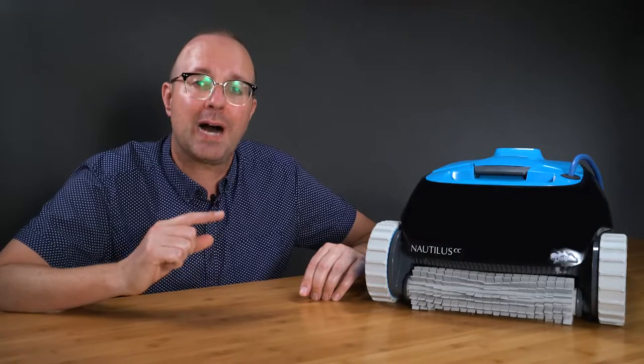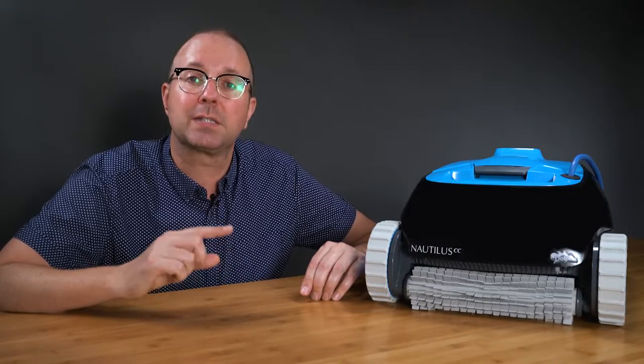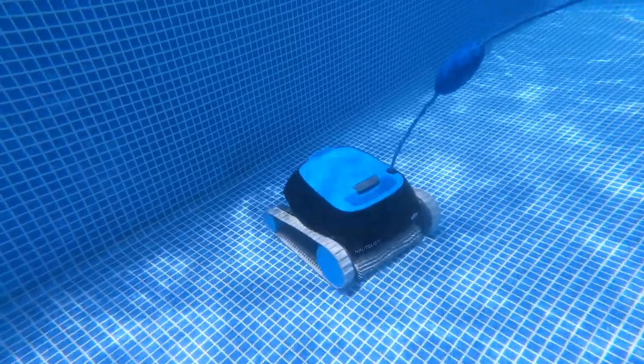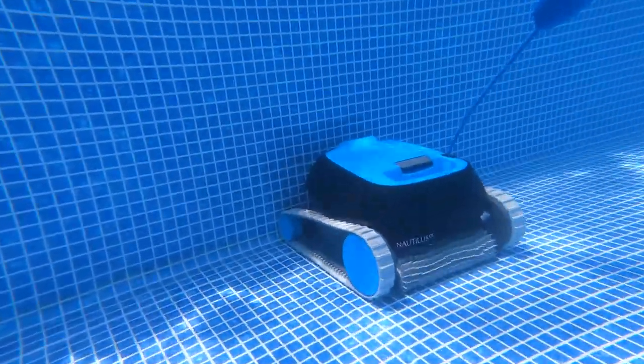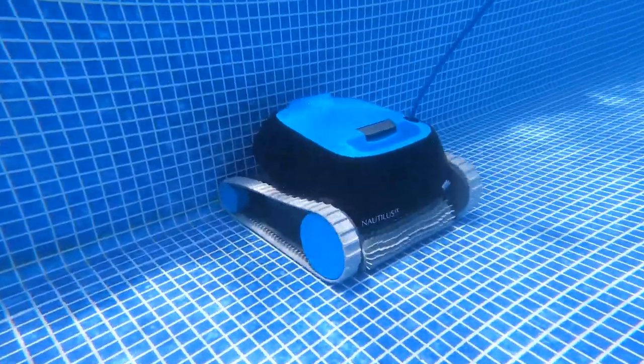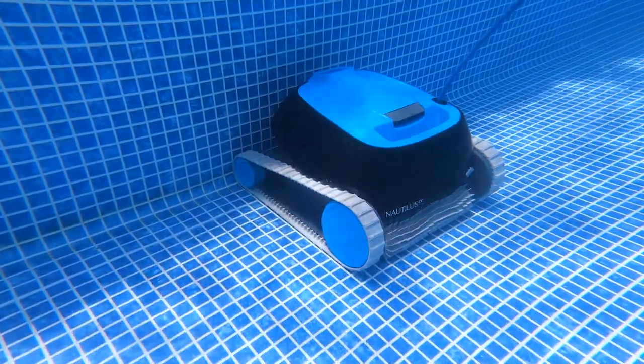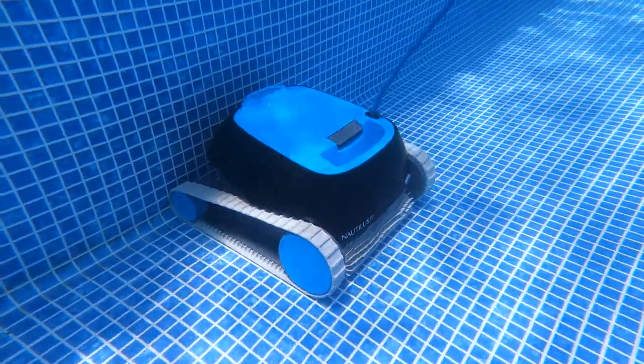This robot is one of the most popular budget models of Maytronics Nautilus line. With the Nautilus CC's price starting at $649, it may seem like a great choice, but don't be fooled. It lacks a ton of key features that pool owners need to have, especially in an in-ground pool.